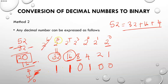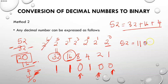Therefore, 52 is equivalent to 32 plus 16 plus 4, which corresponds to 2 to power 5, 2 to power 4, and 2 to power 2. All positions in between that are not used are given the value 0. So 52 in base 10 is represented in binary as 110100 in base 2.